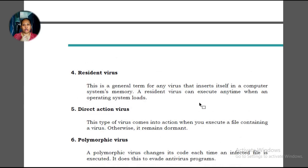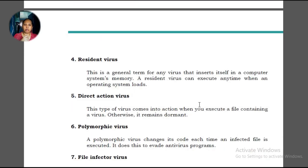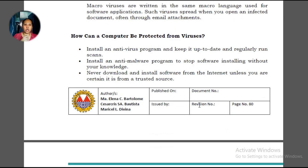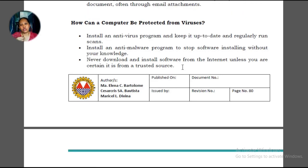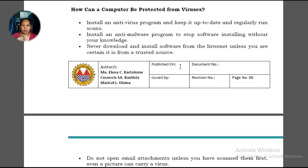There are many types of viruses that can enter our computer. How can you protect your gadgets or devices from computer viruses? Install antivirus and keep it up to date — updating usually requires an internet connection so the virus definitions it can scan are current. Regularly scan your device, install an anti-malware program, and never download and install software from the internet unless you are certain it is from a trusted source. Make sure the site is legitimate and not a phishing site pretending to be legitimate.